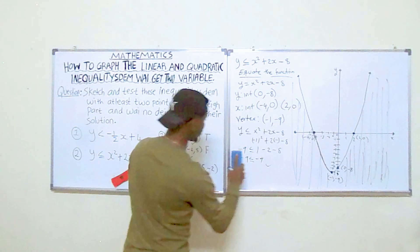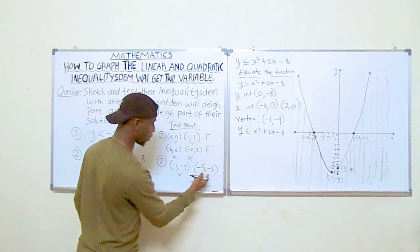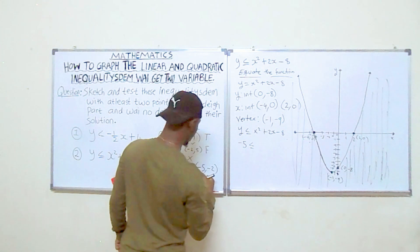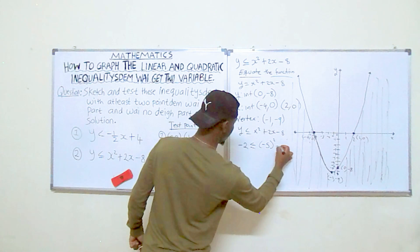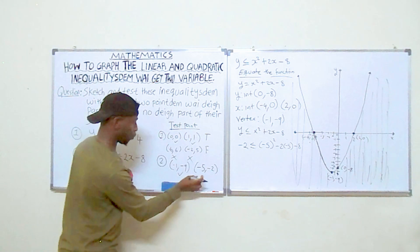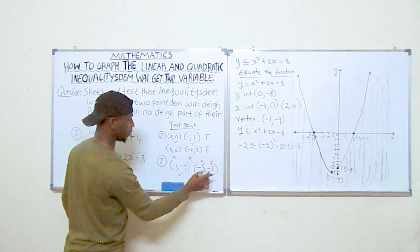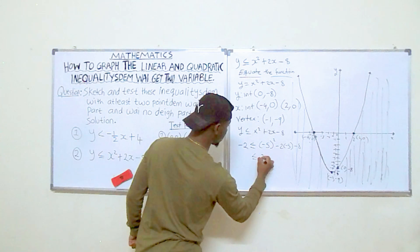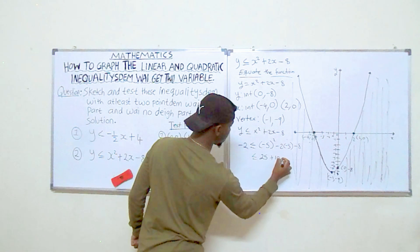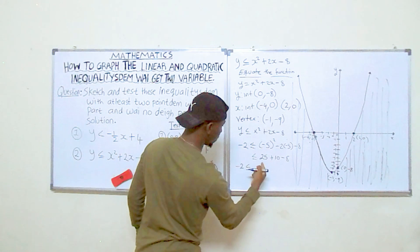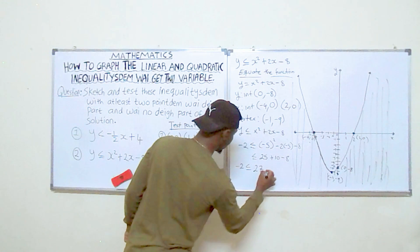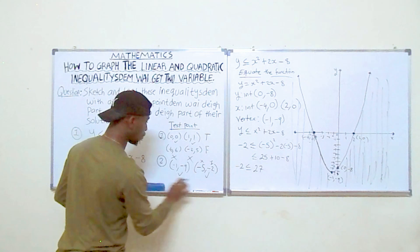Second test point: (−5, −2). Substituting y equals negative two: is negative two less than or equal to (−5)² + 2(−5) − 8? That gives 25 minus 10 minus 8 equals 7. Wait — 25 plus 10 minus 8 equals 27. So negative two less than or equal to 27 — that is true. This point satisfies the inequality.